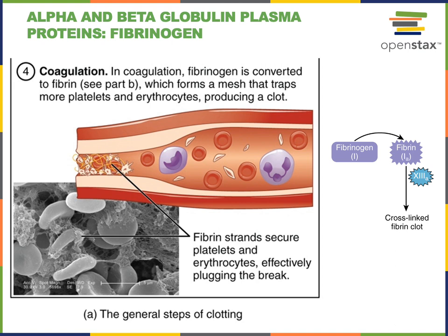Another protein found in the alpha and beta globulin bands of the plasma protein electrophoresis is fibrinogen. Fibrinogen is an important protein for the coagulation mechanism that helps to stop bleeding. It is a soluble protein that can be activated to form a cross-linked network called fibrin. In coagulation, soluble fibrinogen is converted into the insoluble fibrin protein, forming a cross-linked network that helps stabilize a blood clot.